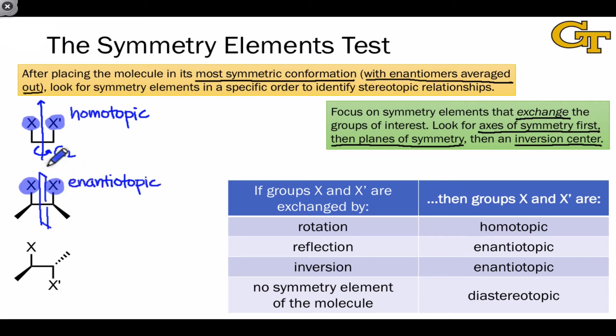If we find that no plane of symmetry of the molecule exchanges the groups, we then look for an inversion center. If an inversion center of symmetry exchanges the groups of interest, then the groups are also enantiotopic. If we reach the end of this process, and we've seen that no rotational axis of symmetry, plane of symmetry, or inversion center exchanges the groups in question, but we're sure that they have the same connectivity, then the relationship between the groups is diastereotopic.